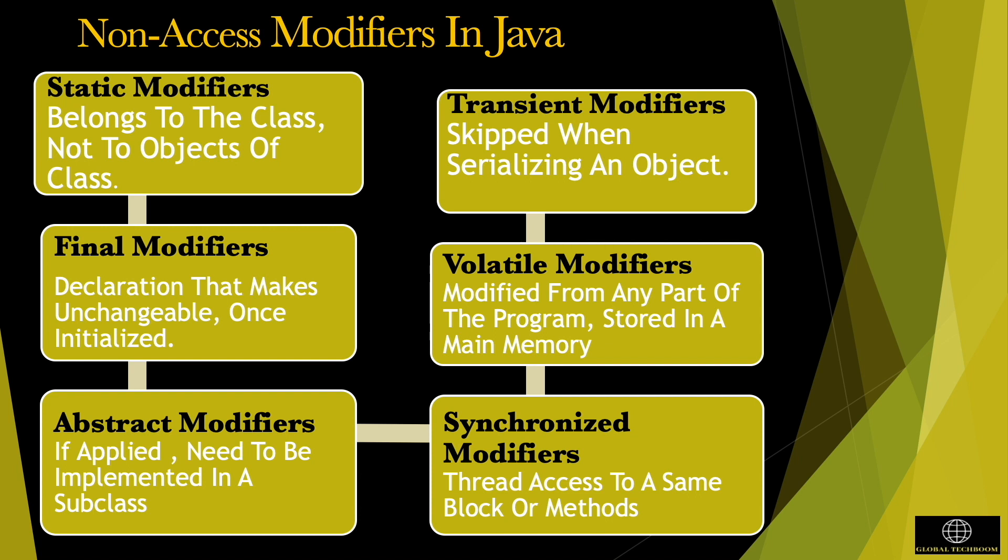Let's see volatile modifier. A volatile variable is stored in main memory, it can be changed unexpectedly by some other part of the program. Last one is synchronized modifier. Synchronized keyword is used when more threads need to use the same resource.